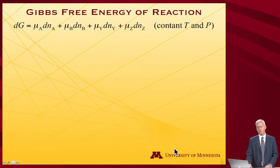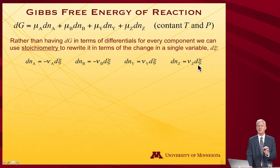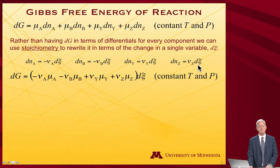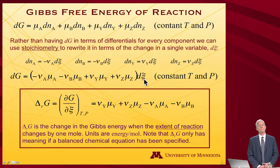Rather than writing dG in terms of the differentials of every component, I can use the stoichiometry from before to relate all these different component differentials to a single differential, d-xi. So dG becomes: minus nu_A times mu_A, minus nu_B times mu_B, plus the product terms, all times d-xi. And that lets me define something very useful.